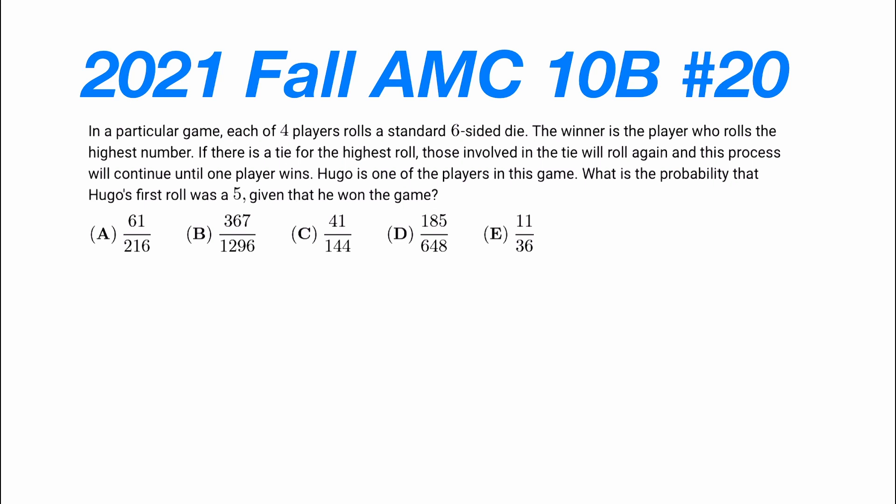In this problem, it states that in a particular game, there are four players, each rolling a fair six-sided die, and the winner is the player who rolls the highest number. If there's a tie, however, they have to roll again, and this process continues until one player wins. Hugo is one of the players in this game, and what is the probability that Hugo's first roll is a five, given that he won the game?